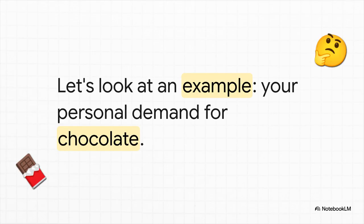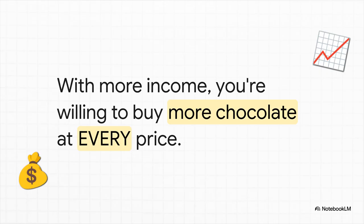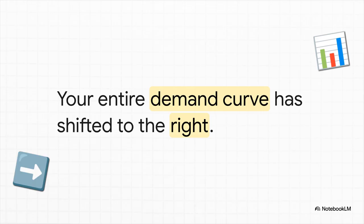To make this really concrete, let's talk about chocolate. Imagine you get a nice raise at work — your income suddenly goes up. What happens to your demand for a chocolatey treat? In the world of economics, chocolate is what we call a normal good. It's just a formal way of saying it's the kind of thing people tend to buy more of when they have more money in their pocket — like going out for dinner more often, buying new clothes, or finally booking that vacation. So because your income went up, your fundamental desire for chocolate has increased. You're now willing to buy more chocolate at every single price. You're not just moving along your old demand curve anymore — your entire demand curve for chocolate literally shifts outwards to the right. This new curve shows that you're willing to buy more at every single price point. Now that is a true shift.